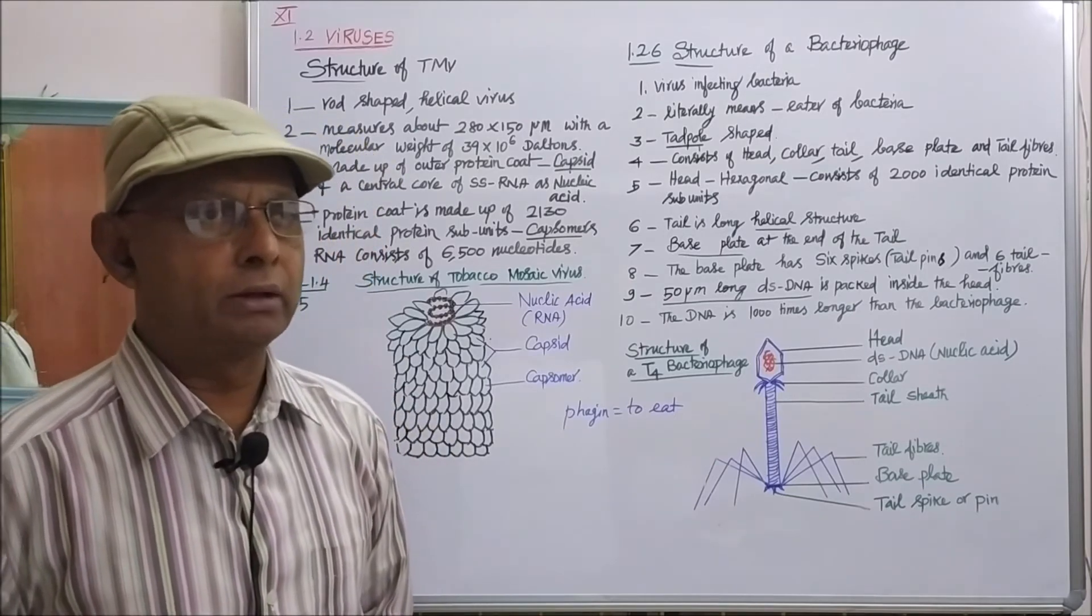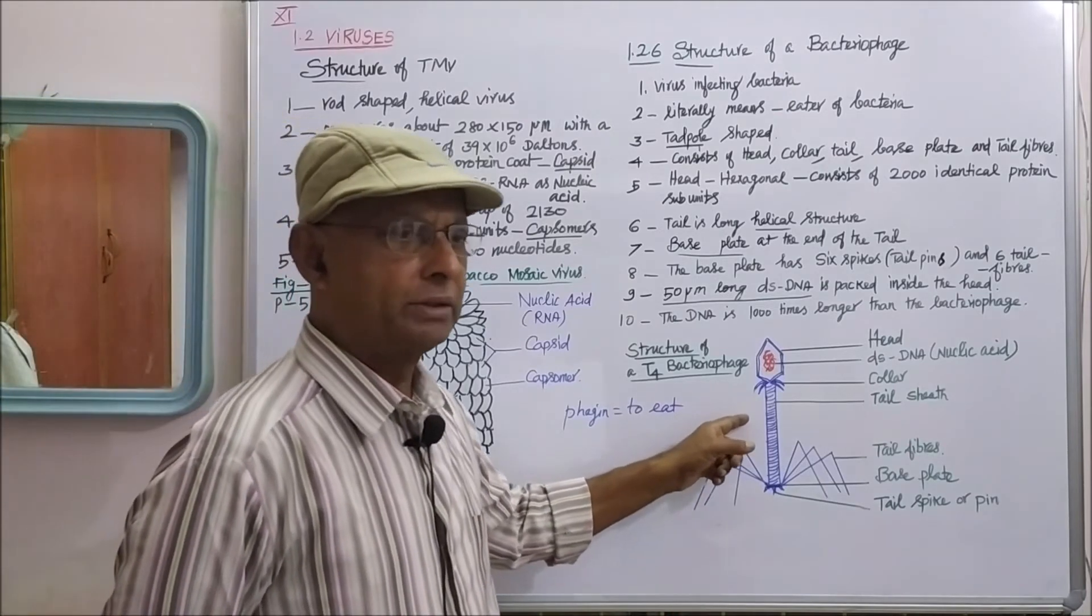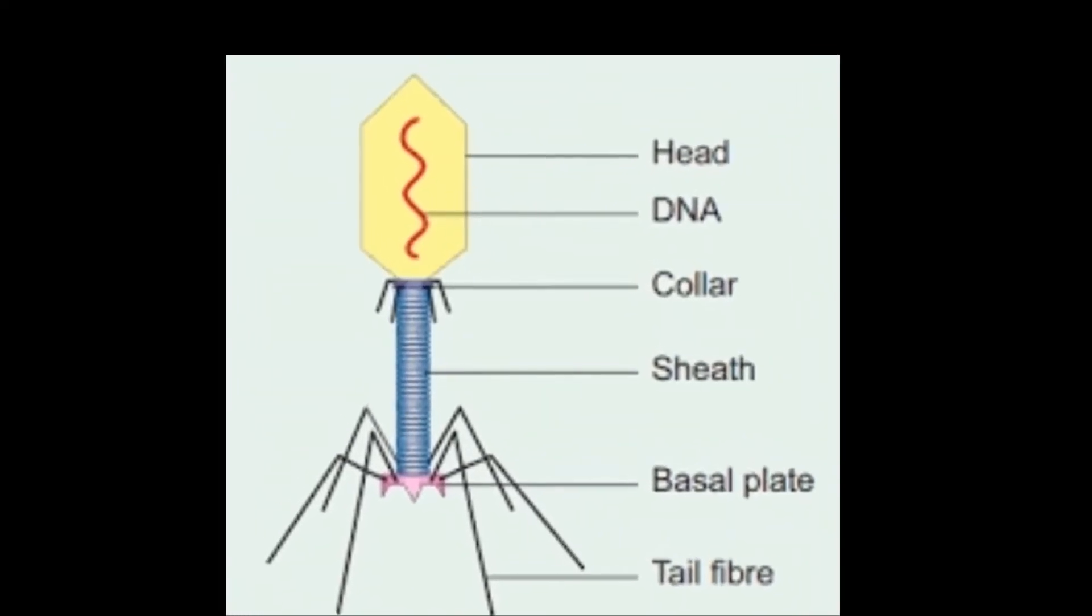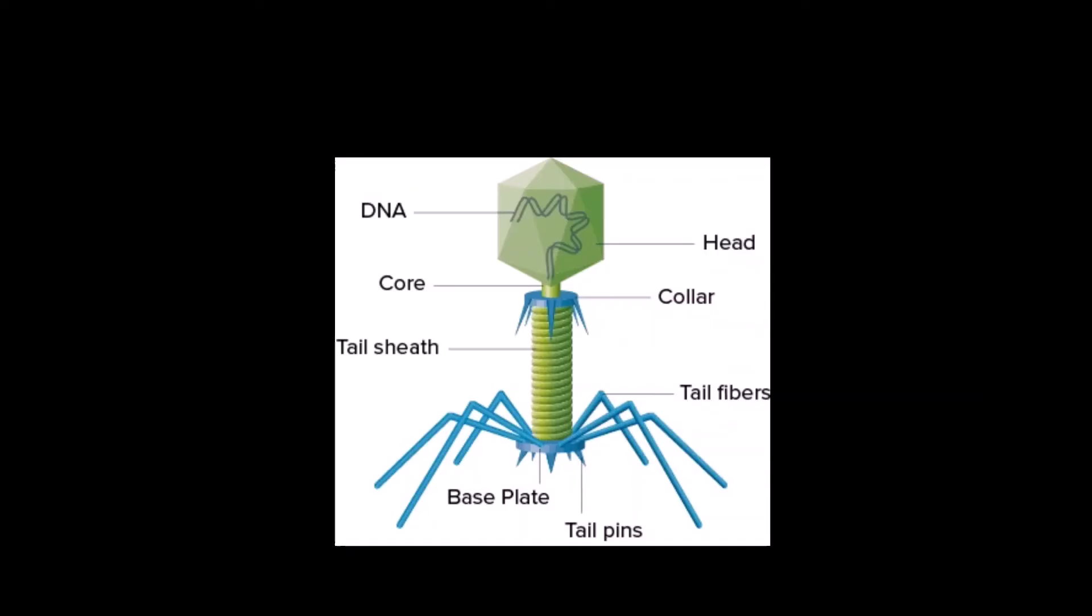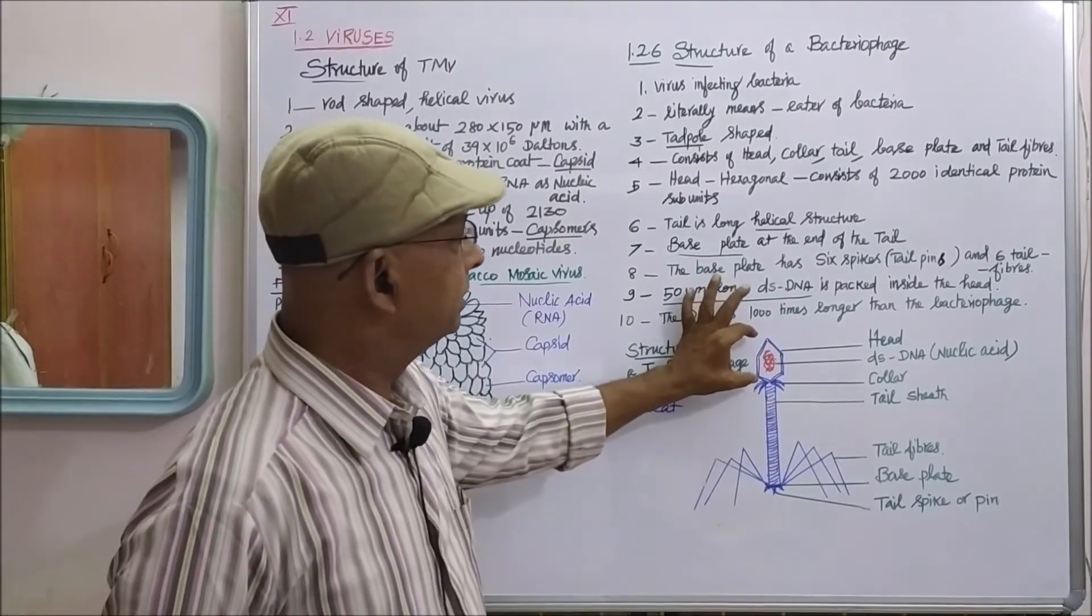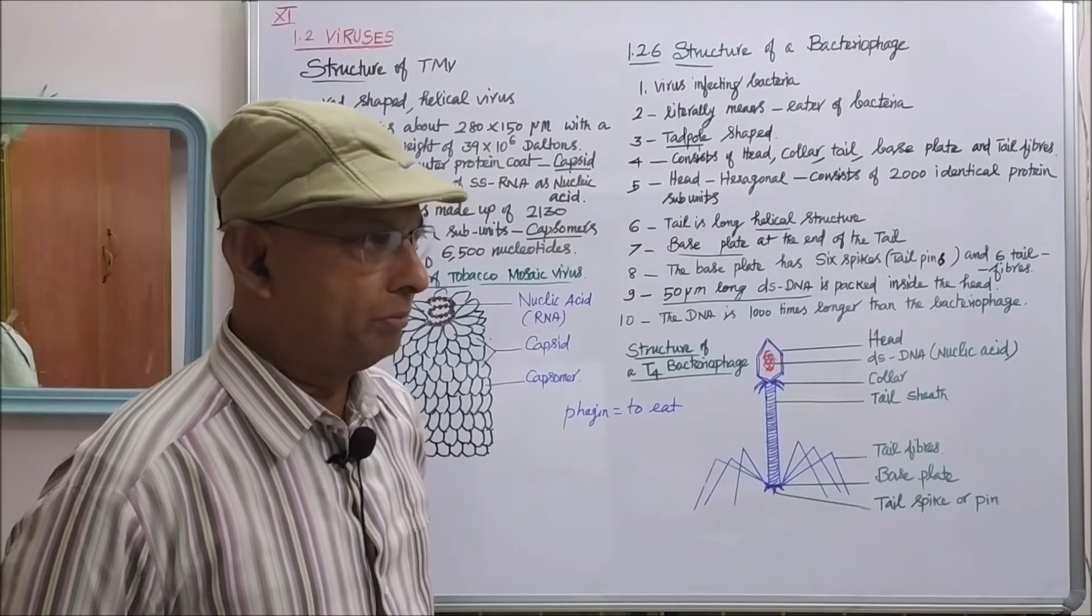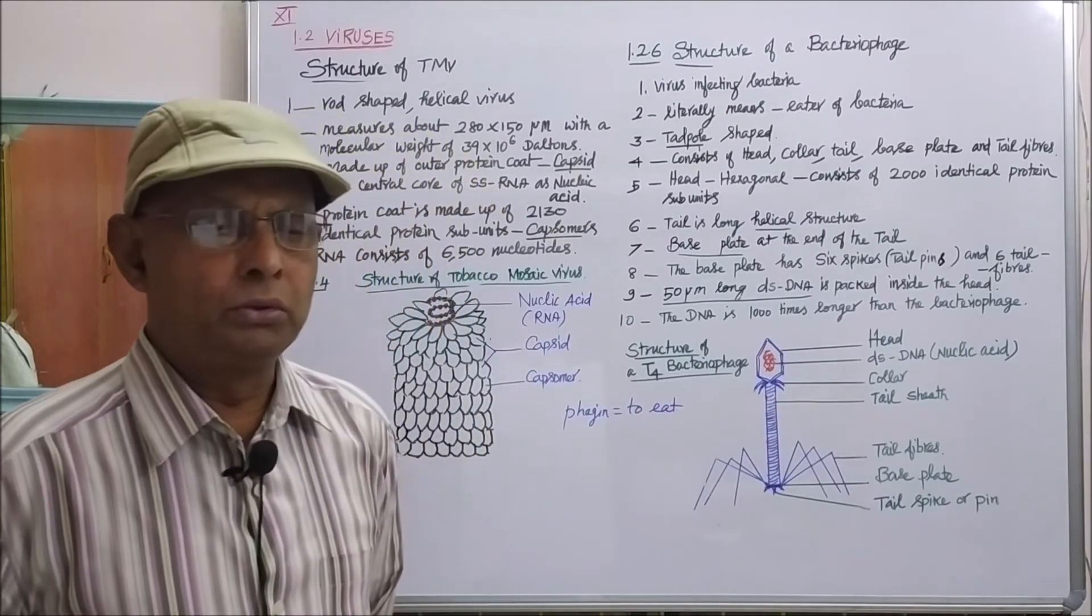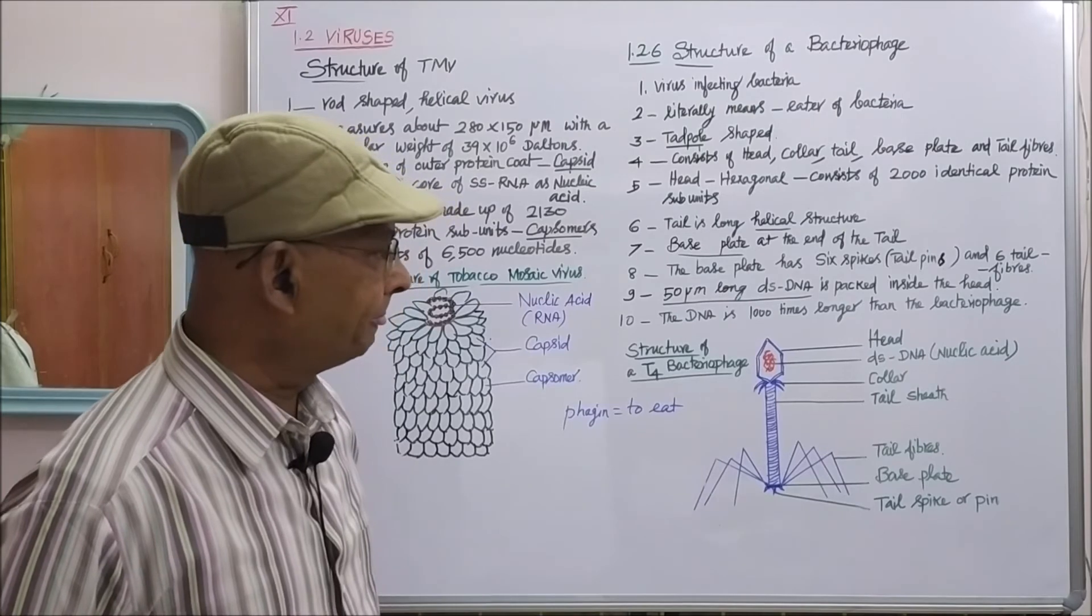We will see the structure of T4 bacteriophage. This is the T4 bacteriophage. It is tadpole-shaped structure consisting of a head, collar, and long tail with base plate. The head is hexagonal and consists of 2000 identical protein subunits. Inside the hexagonal head, double-stranded DNA molecule is tightly packed.